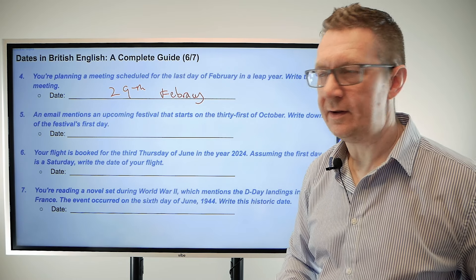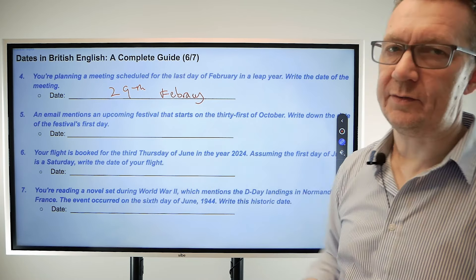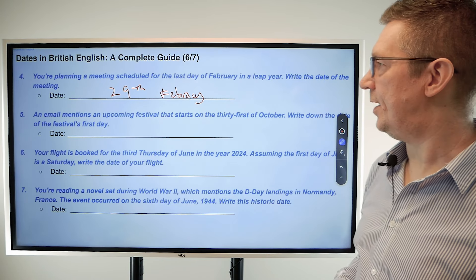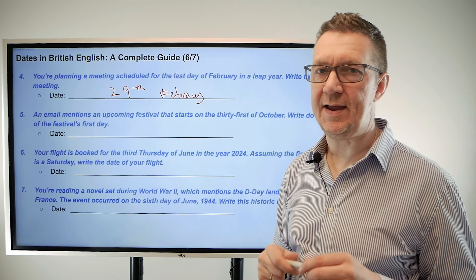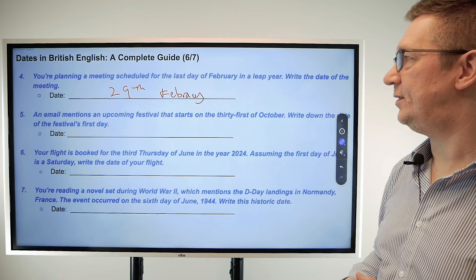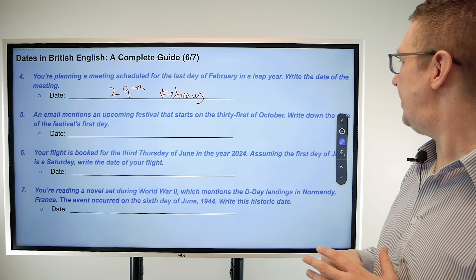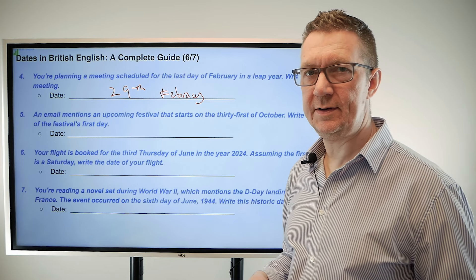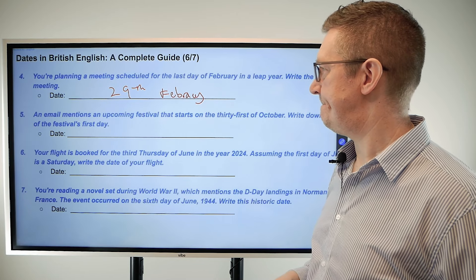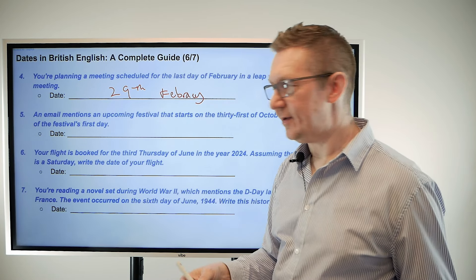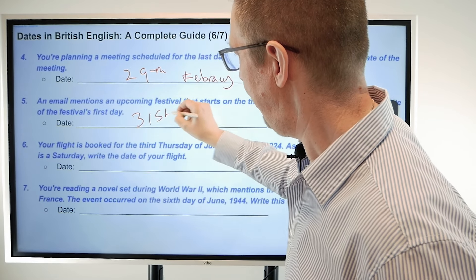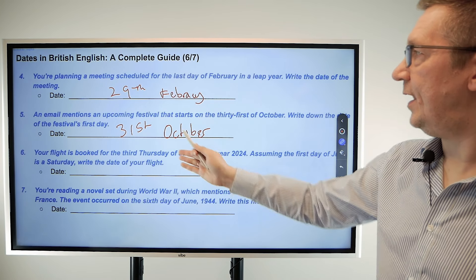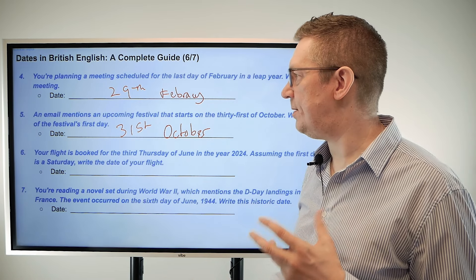Number five: an email mentions an upcoming festival starting on the 31st of October — write down the date of the festival's first day. The answer: '31st October.' This is just how you write dates — you don't have to include 'the' or 'of' in the written form, though you can.